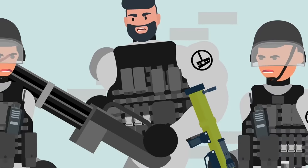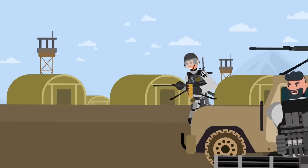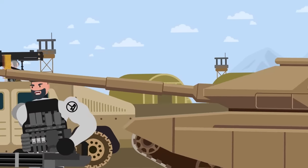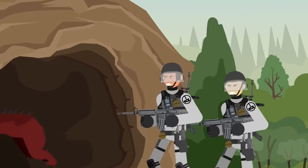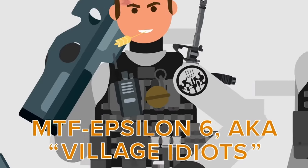MTF Nu-7, aka Hammer Down, are the ones you need to call when you need real heavy-duty work. They're a huge force with a massive stock of army vehicles and heavy weaponry, and are only called in for truly catastrophic events. They also assisted in the containment of SCP-939, the voice-imitating amnestic-producing red monsters.